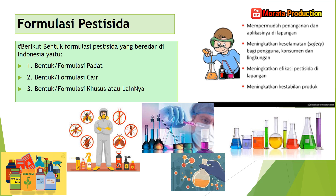Berikut bentuk formulasi pesticida yang beredar di Indonesia, yaitu yang pertama bentuk atau formulasi padat, kedua bentuk atau formulasi cair, dan yang ketiga bentuk atau formulasi khusus lainnya. Mengapa ada formulasi? Fungsinya yaitu: pertama, untuk mempermudah penanganan dan aplikasinya di lapangan. Kedua, meningkatkan keselamatan atau safety bagi pengguna, petani, konsumen, dan lingkungan. Yang ketiga, meningkatkan efisiensi atau efikasi pesticida di lapangan. Dan yang terakhir, meningkatkan kestabilan produk.